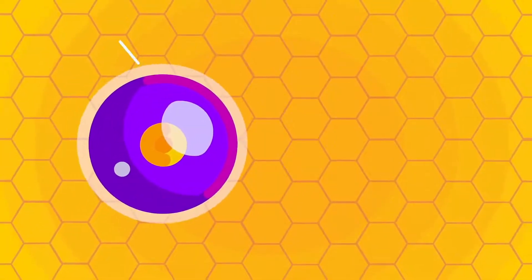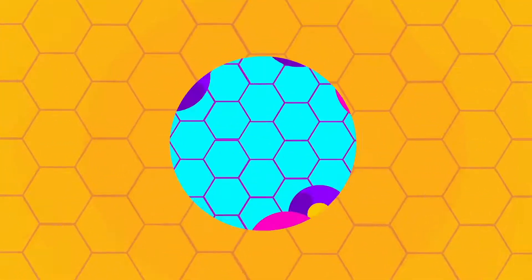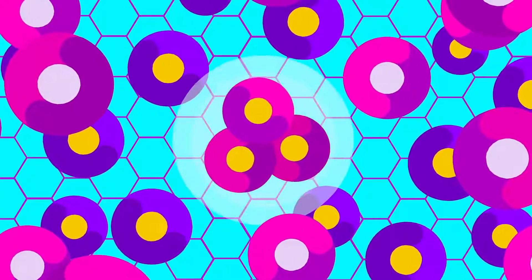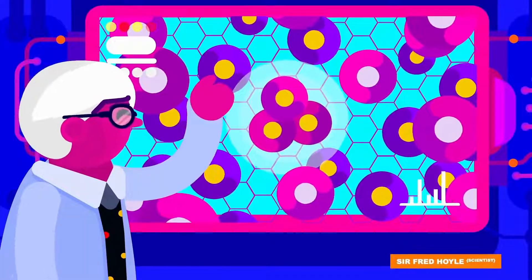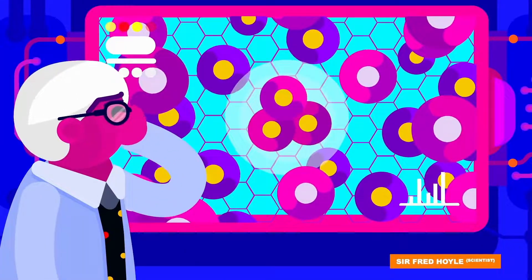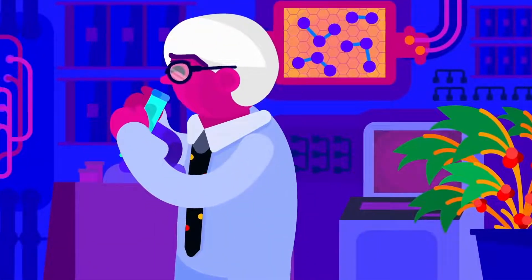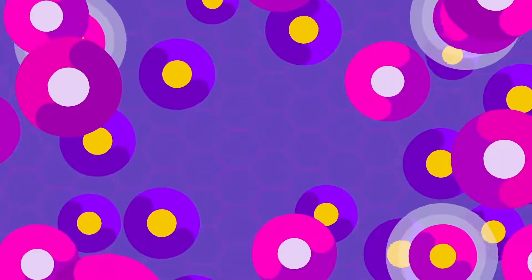When the universe was created we had hydrogen and helium gases but we need carbon for life to exist. But to form carbon you need three heliums to come together. So there's a scientist called Sir Fred Hoyle. He wanted to see how these three heliums come together. He noticed that nothing really was happening when he brought them together.